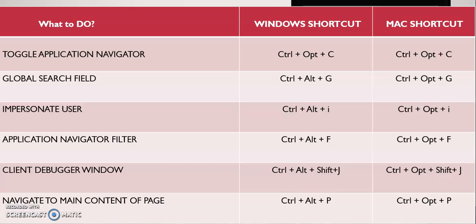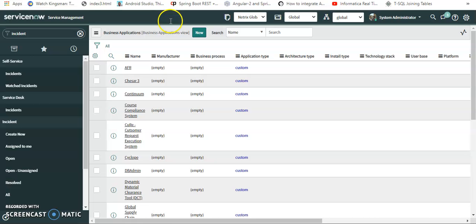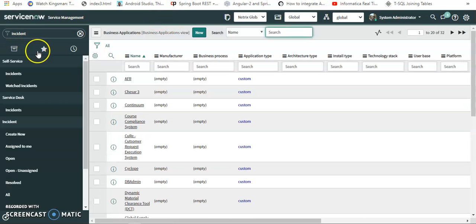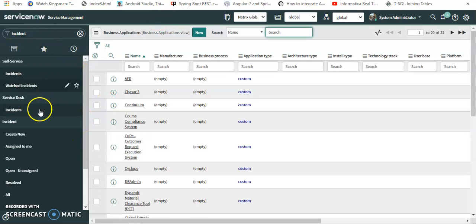While working on an incident page or any form, sometimes you need to check what value is in a field — like the state field — or do client-side debugging. In this situation, we have the shortcut Ctrl+Alt+Shift+J. For example, I have a group of incidents here, let me open an incident record.